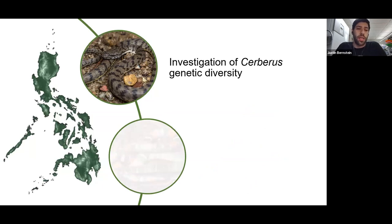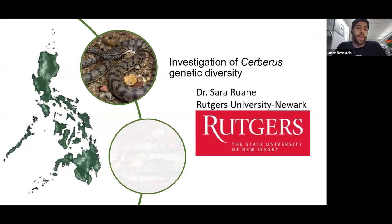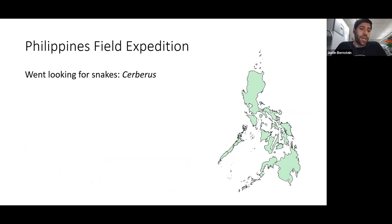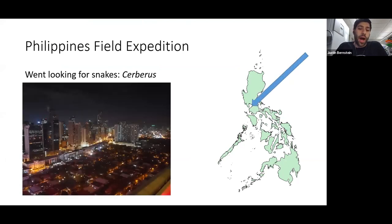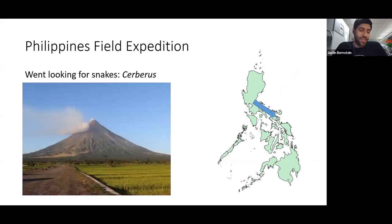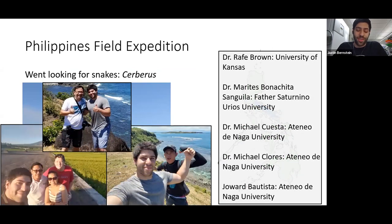The first case study is an investigation of Cerberus genetic diversity, in collaboration with the University of Kansas, colleagues in the Philippines, and my lab under Dr. Sarah Ruan at Rutgers University in Newark. We went to the Philippines in 2019 for 30 days for a preliminary expedition to find populations of Cerberus. We flew into Manila and went to Legaspi, where I met an incredible field team: Dr. Rafe Brown from the University of Kansas, Dr. Tess Sanguila from Father Saturnino Urios University, Docs Cuesta and Flores from Ateneo de Naga University, and Joe Art Bautista, also from Ateneo de Naga.